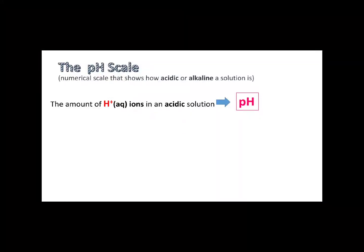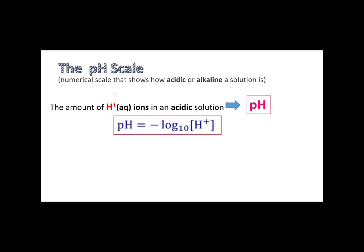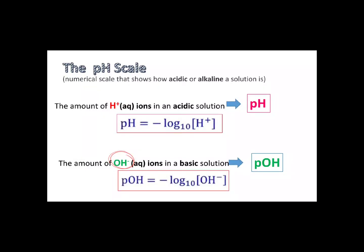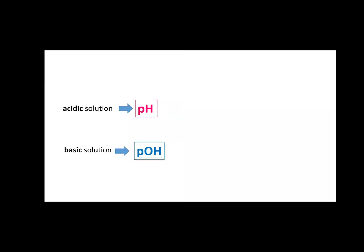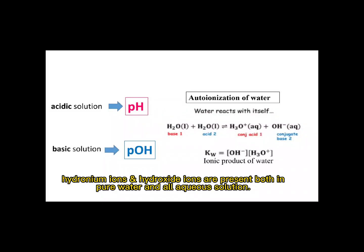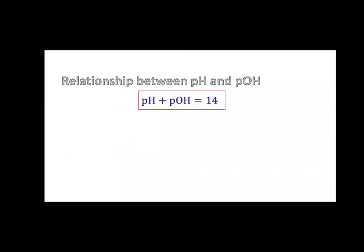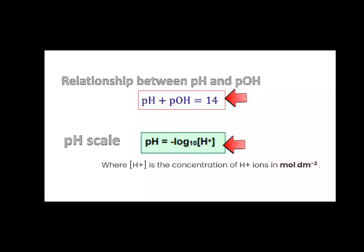So, the amount of hydrogen ions in an acidic solution can be expressed in terms of pH, which is the negative log of hydrogen ion concentration. While the amount of hydroxide ions in a basic solution can be expressed in terms of pOH, which is equal to the negative log of hydroxide ion concentration. We need to know the relationship between pH and pOH in an aqueous solution. To determine the pH value of the solutions, we can use this formula. As a conclusion, we can use these two formulas to calculate the pH value of strong base and strong acid.